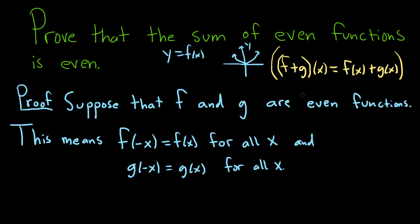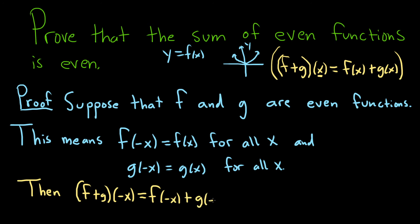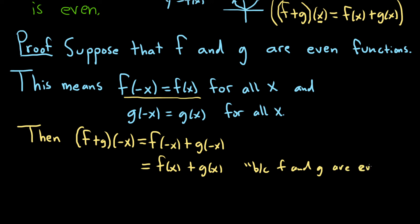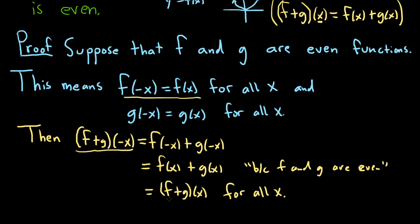So now we have to show that this sum is even. We replace x with negative x: f plus g of minus x. Using the definition of the sum of two functions, this is f of negative x plus g of negative x. Here's the beautiful part — this first piece is equal to f of x because f is even, and this one is equal to g of x because g is even. But this is the definition of f plus g of x, and this holds for all x. So we have that f plus g of negative x is equal to f plus g of x, for all x.